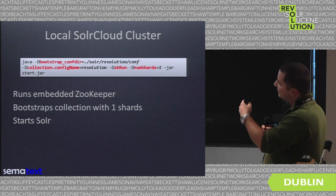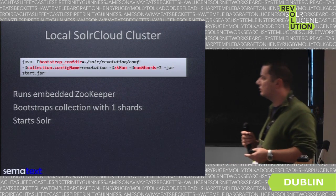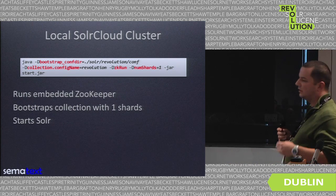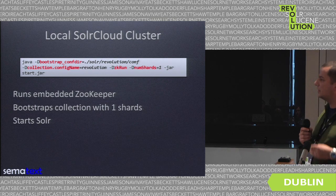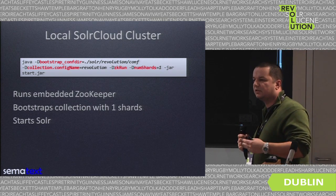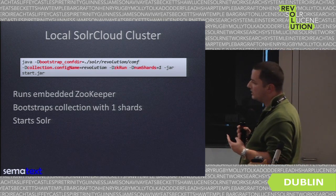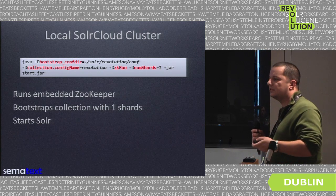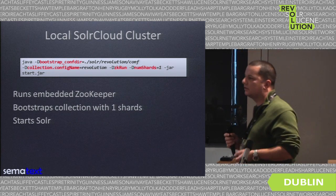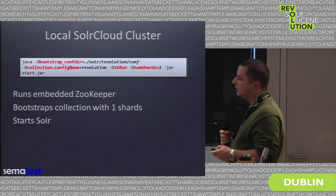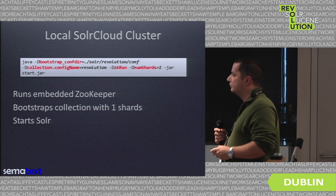We specify the number of shards and start Solr. What happens is that Solr runs the embedded ZooKeeper, starts a collection with a single shard, and Solr is started. You can use it just like you would have a bigger cluster. However, in production that's not sufficient because you don't want to start each server like this.